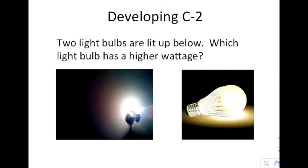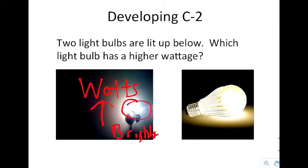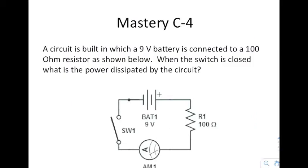So if the two light bulbs are lit up below, which light bulb has a higher wattage? Now assuming they are the same type of bulb, this one right here is going to have the higher wattage. So the watts are greater. Now remember watts is the unit of power. Now the reason I know that is because this is brighter. Now that is assuming that they are the same type of bulb. If they are different types of bulb, there is no comparison that you can make.